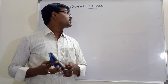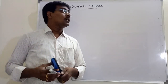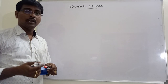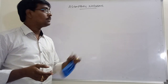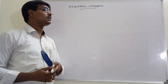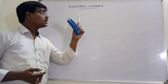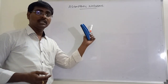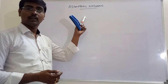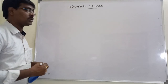In this session we will discuss about asymptotic notations. Generally the performance of the algorithm is measured by using complexities, that is either space complexity or time complexities. The complexities are represented by using these shorthand notations, that is asymptotic notations.